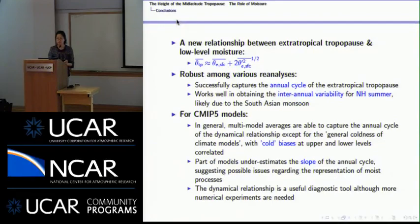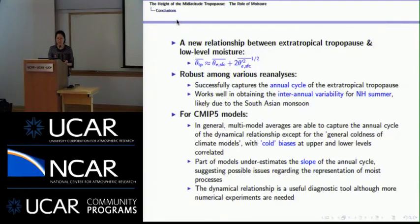Question: What is the timescale over which the relationship holds — does it work at weather timescales? Response: Currently all results shown are monthly averages, but we have also looked at weekly timescales, and a strong correlation is found there as well. We find that the tropopause potential temperature variation tends to follow the low-level moisture fluctuation with a delay of about five days.